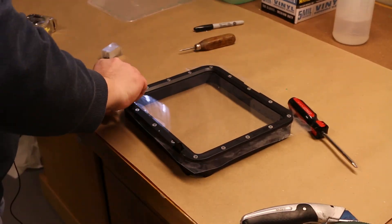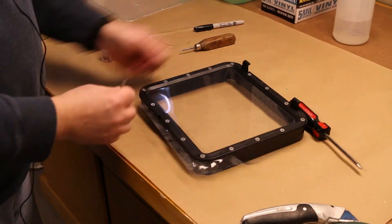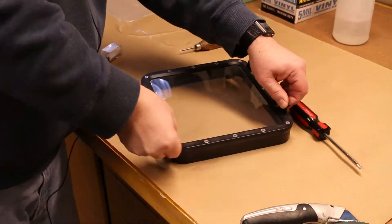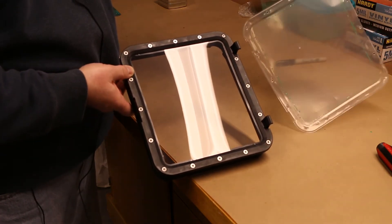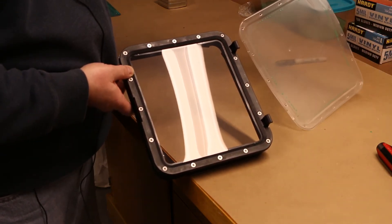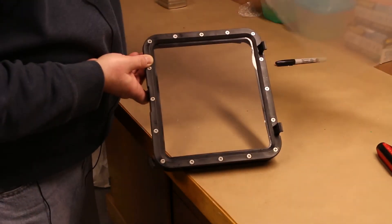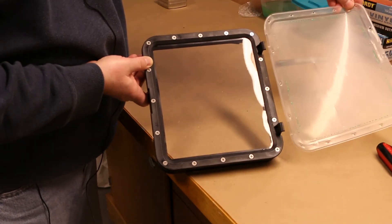Once all the screws are installed, you just need to remove the excess film. I did this using a razor blade. Now I noticed that this vat material is much clearer than the previous vat material. I'll have to see how that works with this printer.